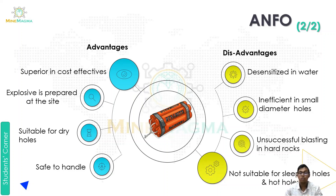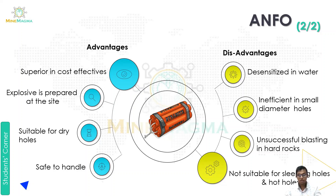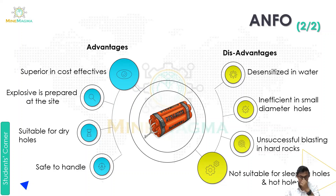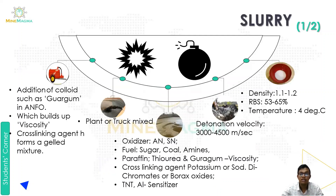The fourth disadvantage is that ANFO is not suitable for sleeping holes or hot holes. Hot holes are boreholes where the temperature exceeds 40 to 60 degrees Celsius; in such cases, the hole must be charged last and blasted as soon as possible. These are the advantages and disadvantages of ANFO. Let's move to the next part: slurry.